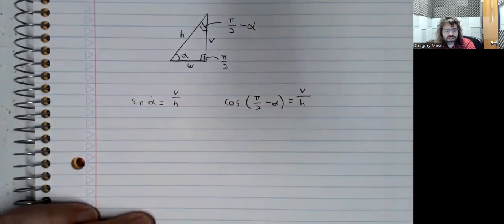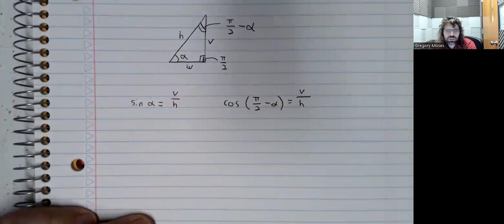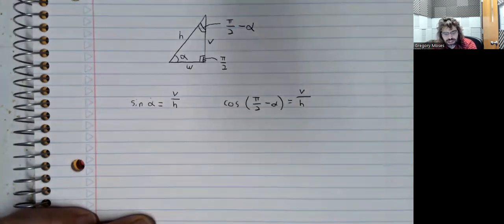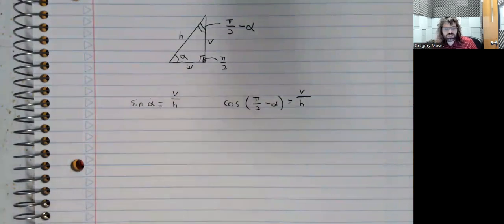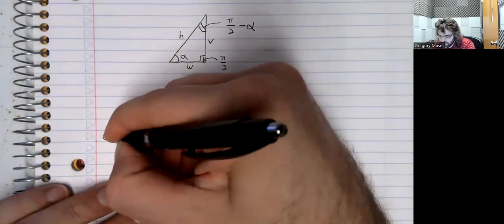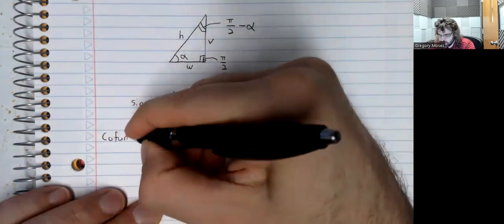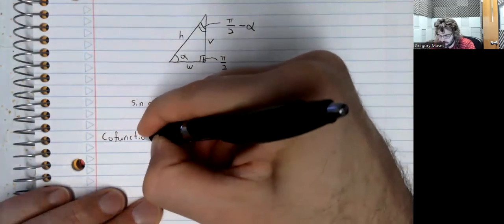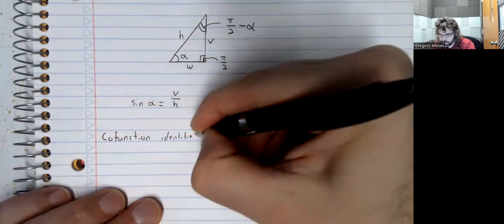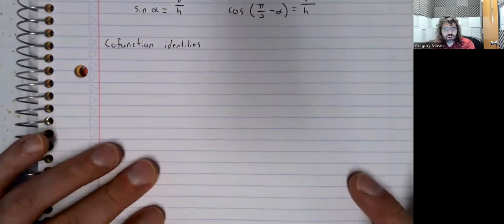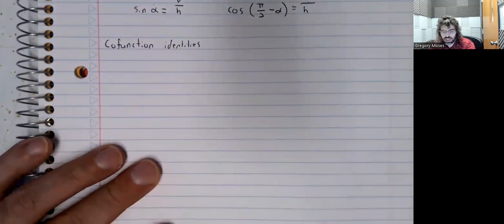So you see, no matter what alpha is, at least as long as alpha is less than pi over 2, so you can create this triangle, this sine and this cosine are the same. They're v divided by h. And you see, the sine is related to the cosine. And for that reason, this is called a co-function identity.